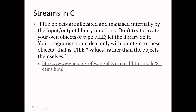FILE objects are allocated and managed internally by the I/O library functions. Don't try to create your own objects of type FILE — don't write 'FILE f = something'. Let the libraries do it. Your programs should deal only with pointers to these objects, so when writing a program that reads or writes to a file, always use FILE* as your variable type.